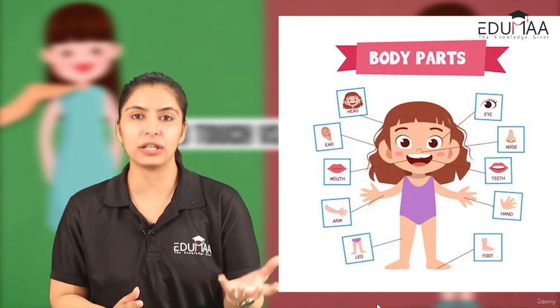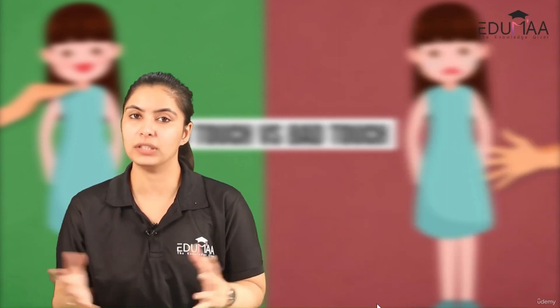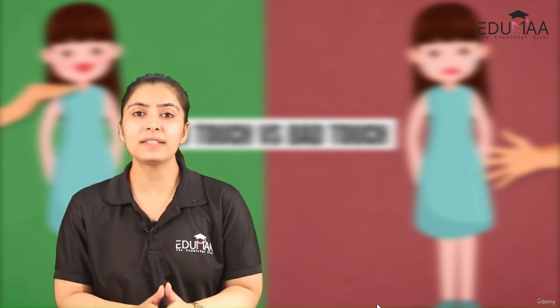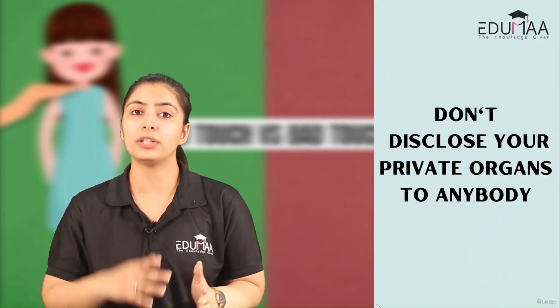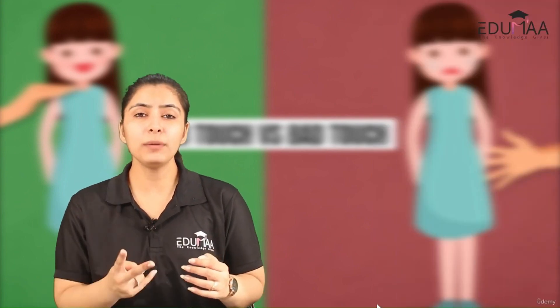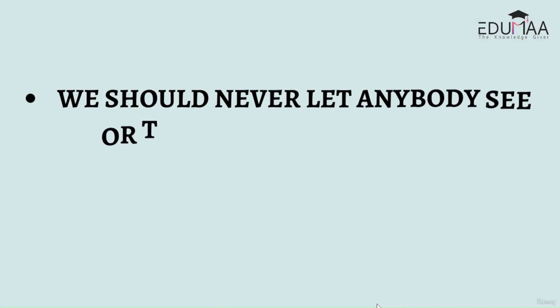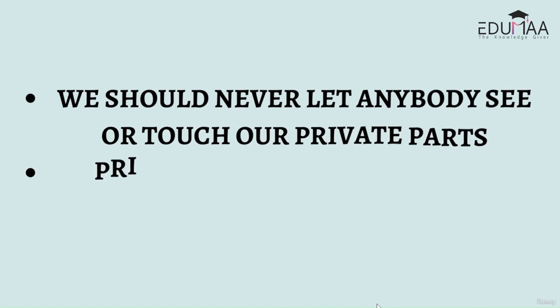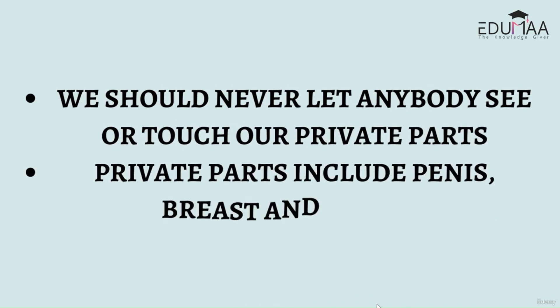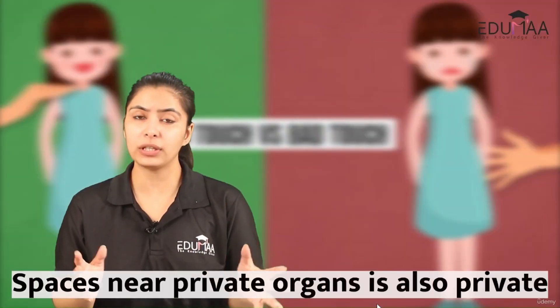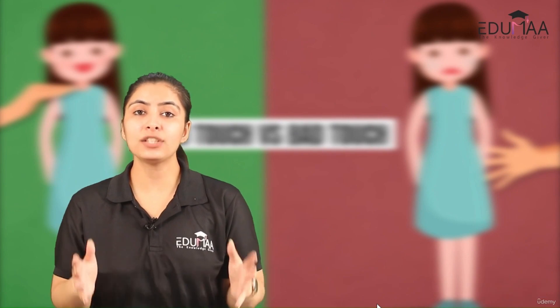Two important points you should teach your child: First, we should never let anybody see or touch our private parts. Second, private parts include the penis, breast, and vagina. You should also tell them that the spaces near their private organs are also private — nobody can touch or see them.